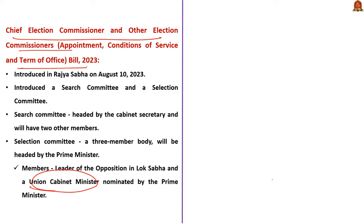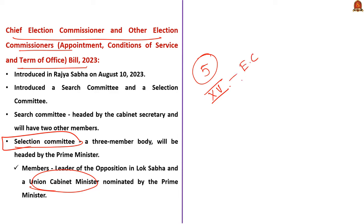Also note that the recommendations of the selection committee will be valid even when there is a vacancy in the committee. Looking at the constitutional provisions, there are 5 articles in Part 15 of the Constitution related to the appointment of election commissioners, but they do not lay down any specific legislative process. The articles from 324 to 329 deal with the election commission.